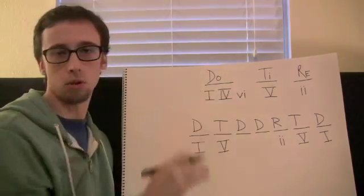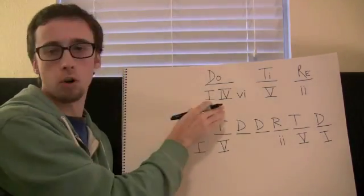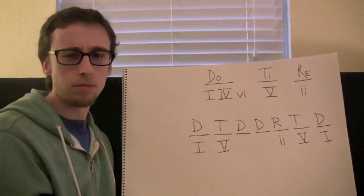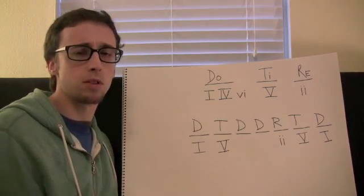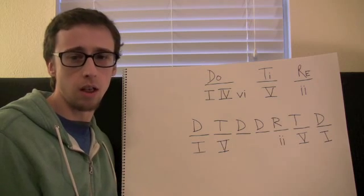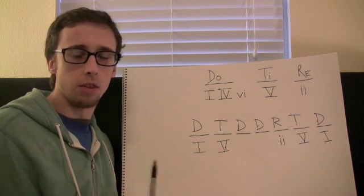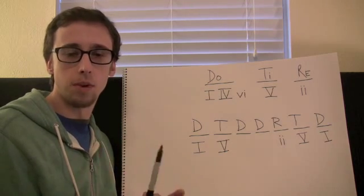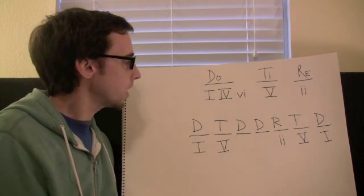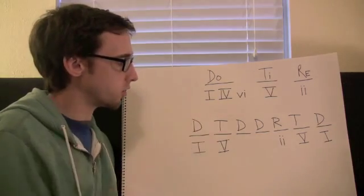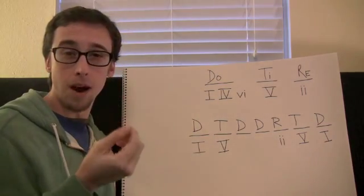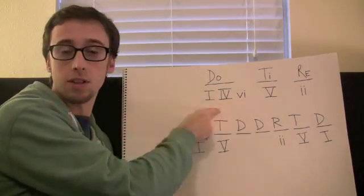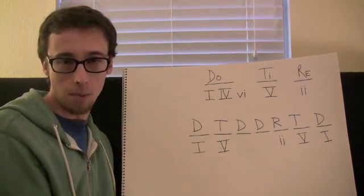Let's look again at our three possible choices. Notice that our I and IV chord are both major, and our VI chord is minor. This brings us to the important topic of quality — and by quality I mean whether the chord is major or minor. So when we're listening for our DO chords, if we hear a minor chord that has a DO in it, we know automatically that it's a VI chord, because that's our only minor chord option.